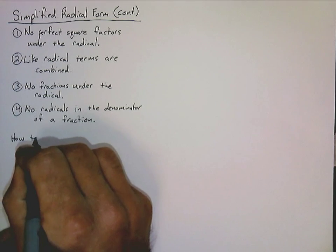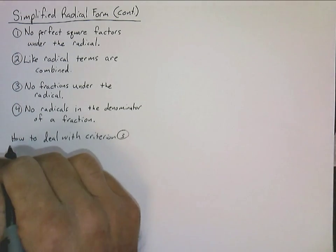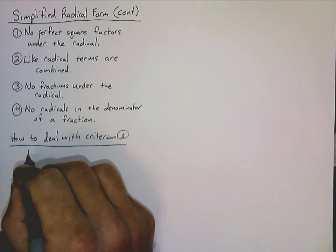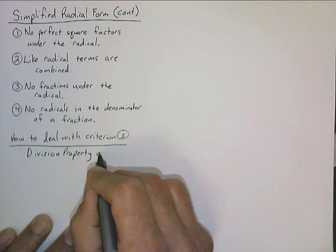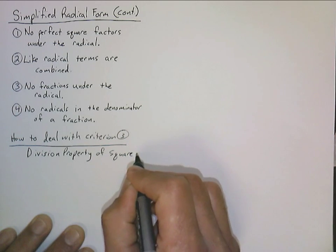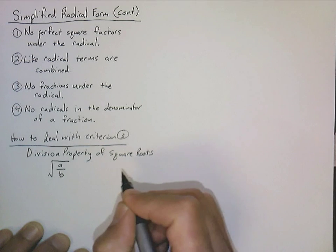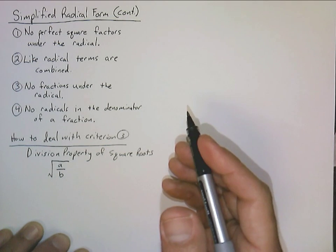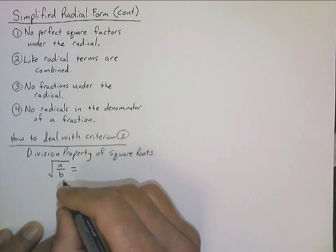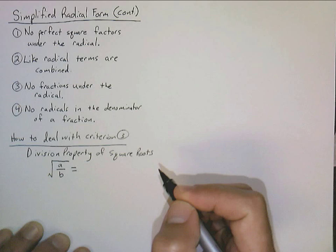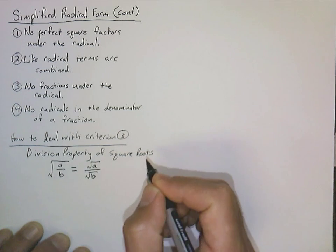How to deal with criterion three is just using what we call the division property of square roots. Basically, if we have the square root of a quotient, we can distribute that square root to both the numerator and denominator. It works the exact same way as the product property, because division is the same thing as multiplication, and radicals are exponents — specifically an exponent of one-half. So we just distribute that exponent of one-half to both the numerator and the denominator.